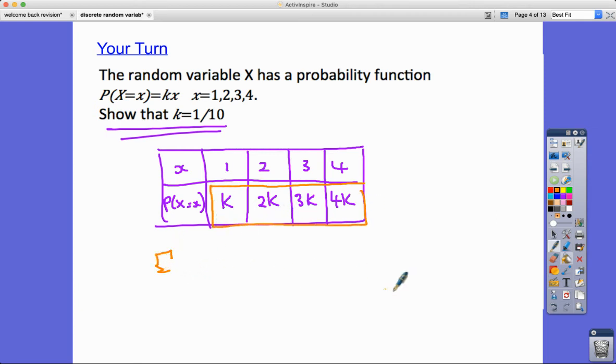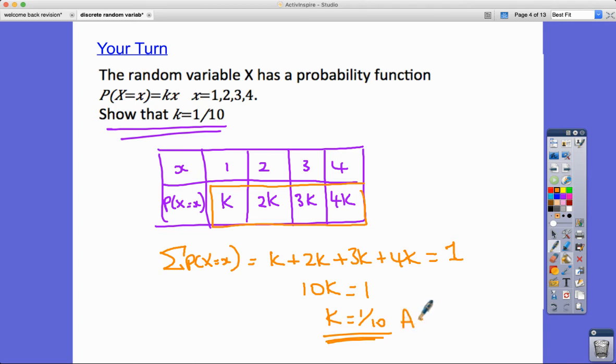Again, we know that all of these should add up to one. So, therefore, if the probability, the sum of probability of x equals x is going to be equal to k plus 2k plus 3k plus 4k. And we know that they should add up to one. Let's add up how many k's we've got on this side. We've got 10. So now I know that k must be equal to one-tenth as required.